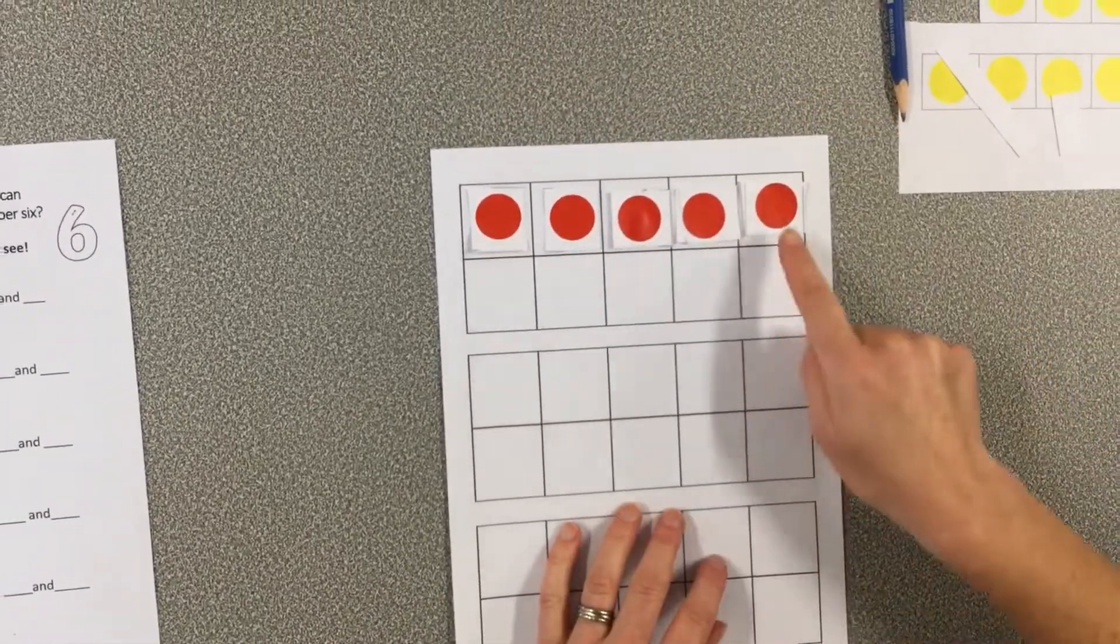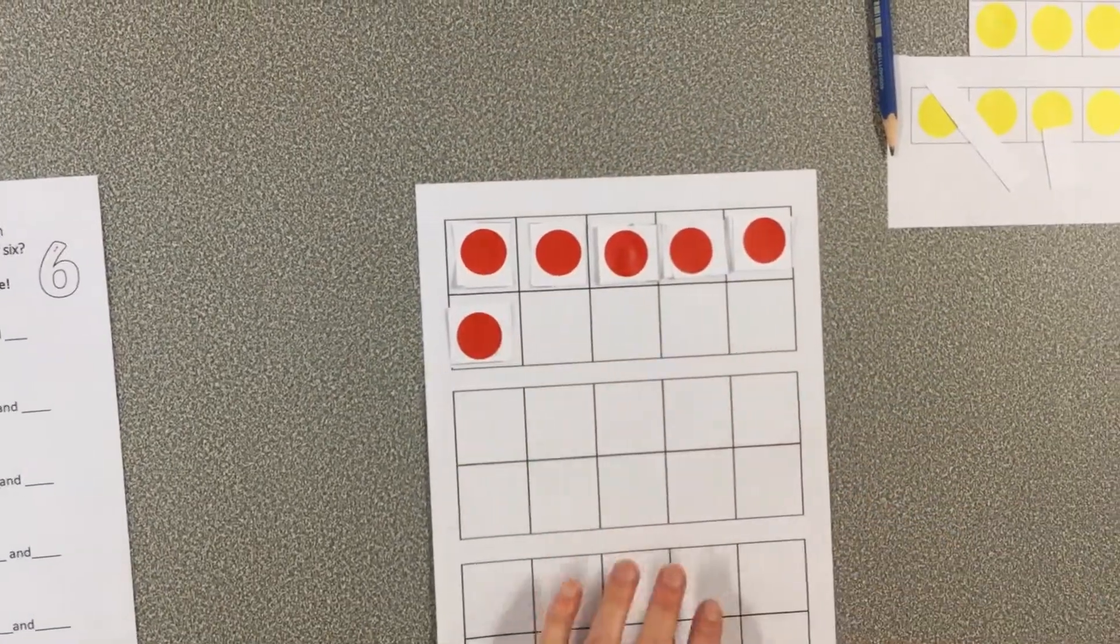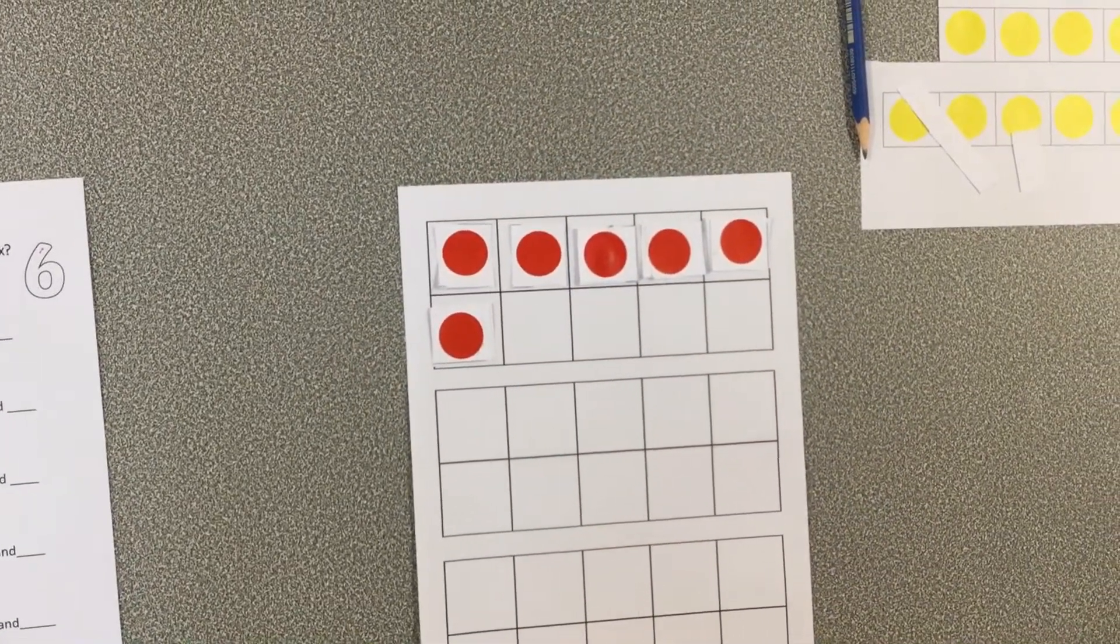And I'm going to start now by putting six red counters on my tens frame. Now I have five. And one more. Now I have six.